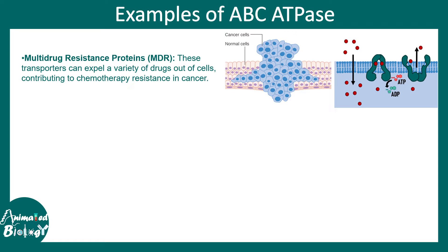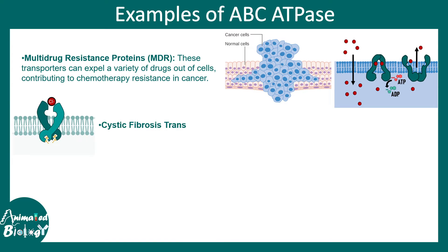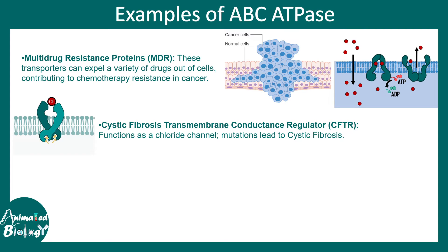Now let's talk about some examples of ABC transporters. Multi-drug resistance proteins, which are found in many tumor cells, can literally throw out drugs that are provided as therapeutics. That's why they are known as drug efflux pumps, and that makes it super difficult to treat any type of cancer or tumor.